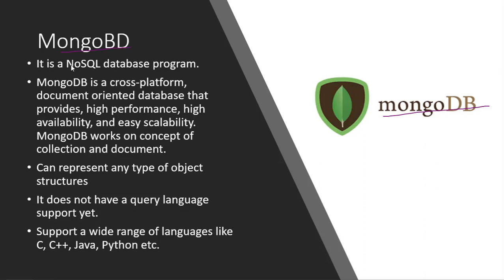Now let's come to MongoDB. MongoDB is a NoSQL database program and an advanced version of NoSQL databases. It offers high performance and is a document-oriented database. Document-oriented databases use a flexible data model, making MongoDB more efficient when your company needs some structure. You choose between MongoDB, Cassandra, or Kafka based on your specific requirements. MongoDB can represent any type of object structure and is highly scalable.